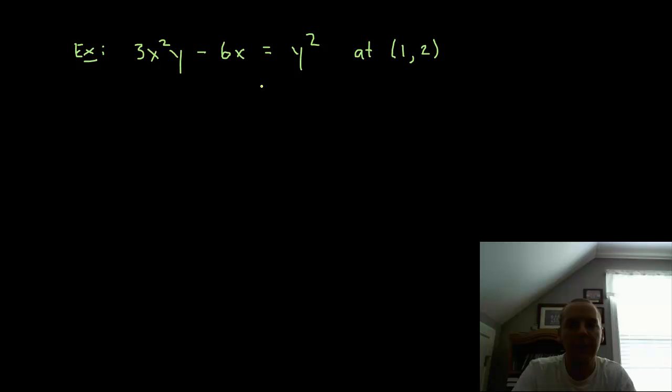This is defined implicitly. Implicitly means it's not y equals some function of x where you only have x's on the right hand side. You see we have x's and y's intermingled here. So first step is to take the derivative. Now if you are unfamiliar with implicit differentiation, in the previous video I cover how to do implicit differentiation, so we're going to assume you guys know how to do that right here.